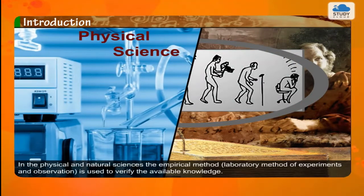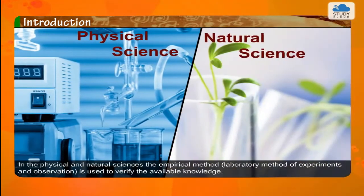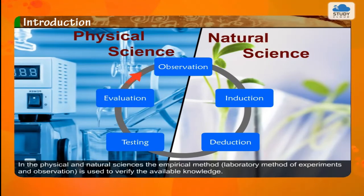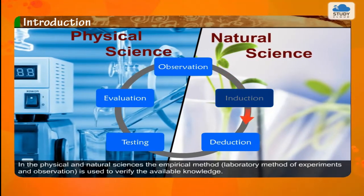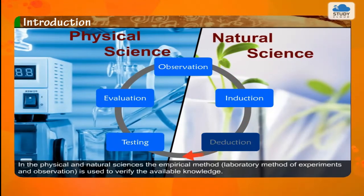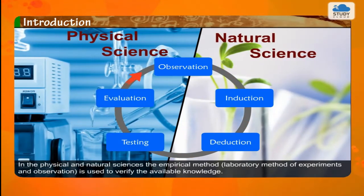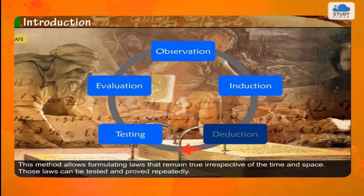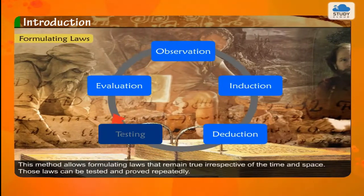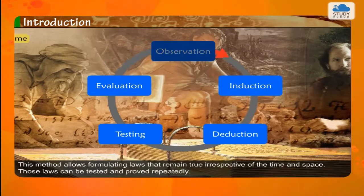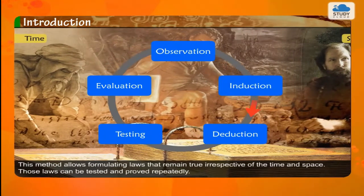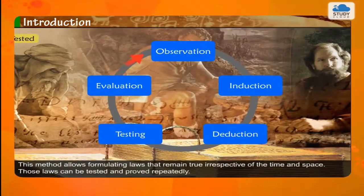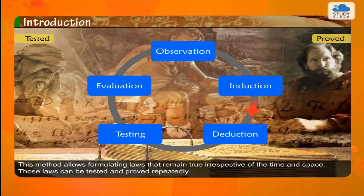In the physical and natural sciences, the empirical method or laboratory method of experiments and observation is used to verify the available knowledge. This method allows formulating laws that remain true irrespective of time and space. Those laws can be tested and proved repeatedly.